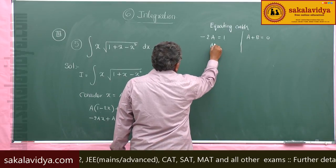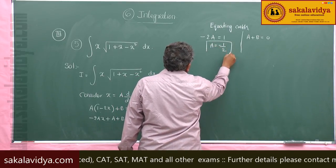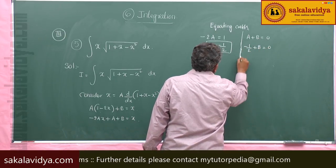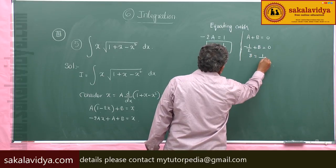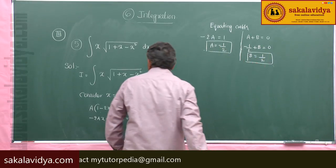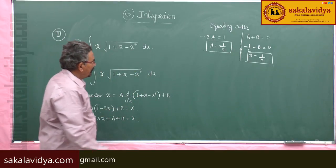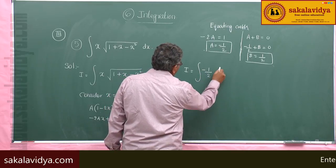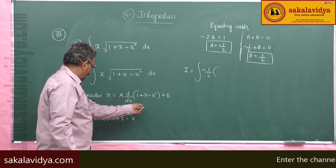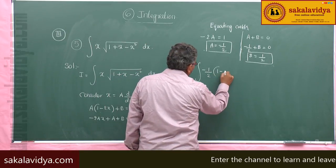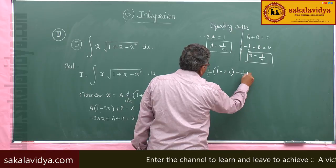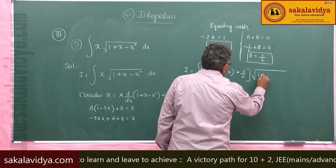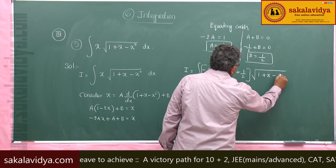That means minus 2a equals 1 and a plus b equals 0 (no constant term). So a becomes minus 1/2, and since minus 1/2 plus b equals 0, b becomes 1/2. Now this integral can be rewritten as I equals minus 1/2 times (1 minus 2x) plus 1/2, all times root of (1 plus x minus x squared) dx.